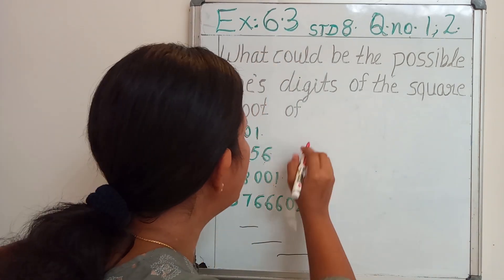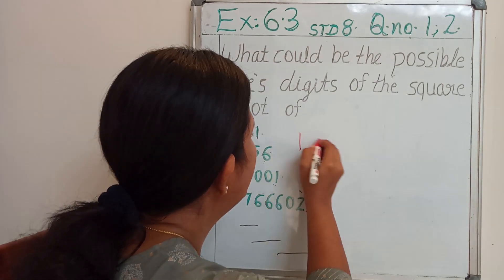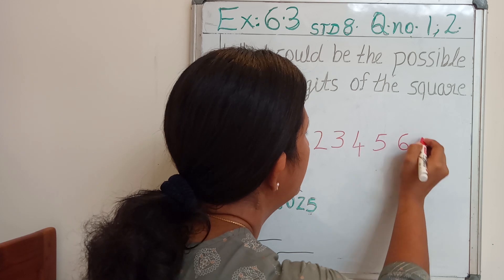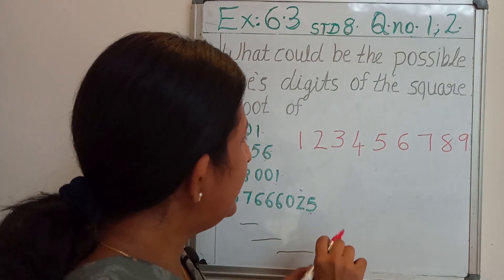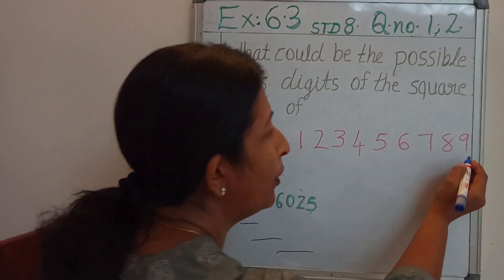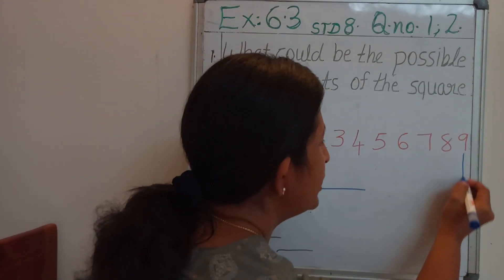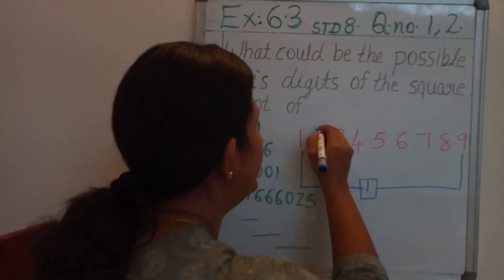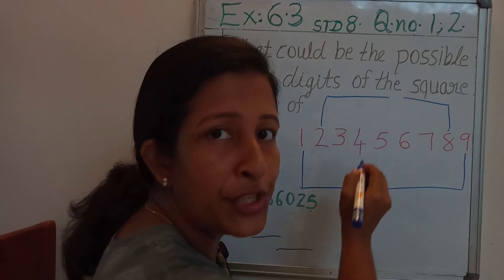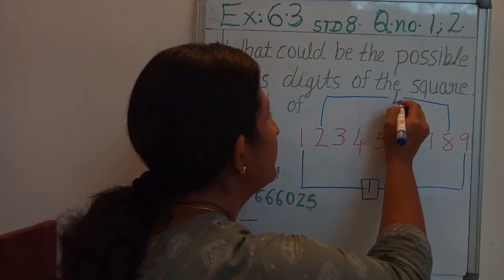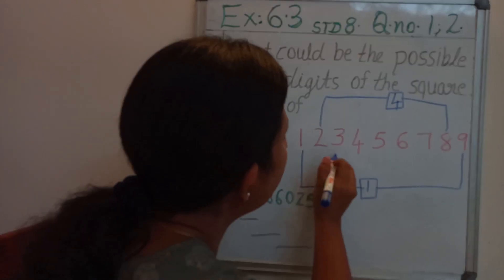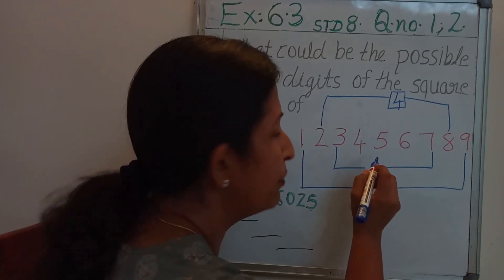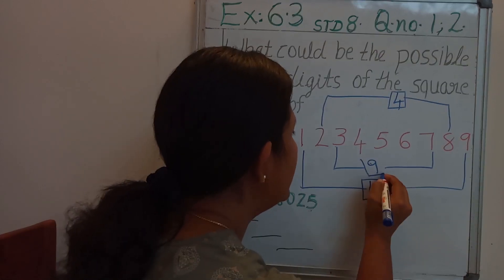We have studied that — I am going to write down the numbers starting from 1 up to 9. If a number is ending with 1 or 9, its square should end with 1. If a number is ending with 2 or 8, its square should end with 4, because 8 eights are 64. If a number is ending with 3 or 7, its square should end with 9 — because 7 sevens are 49 and 3 threes are 9.